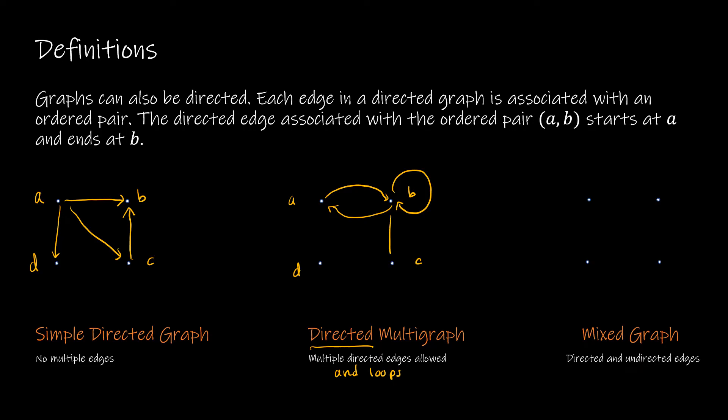A mixed graph is a graph that allows for both directed and undirected edges. Depending on the situation you're modeling, you might have A goes to B and B goes to A, but A and D are connected with an undirected graph. A mixed graph can also have a loop. Here are three more examples: simple directed, directed multigraph, and a mixed graph.